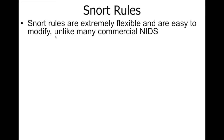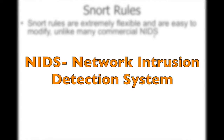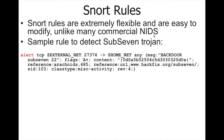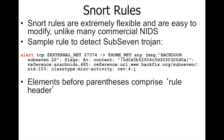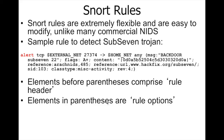Here is a sample rule that detects a Sub7 Trojan. We can see keywords like: alert, tcp, external_net, 27374, then a direction operator, then another variable 'any', then opening and closing parentheses. Whatever elements appear before the parentheses are called the rule header, and elements inside the parentheses are called rule options.